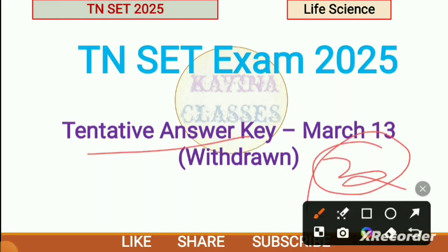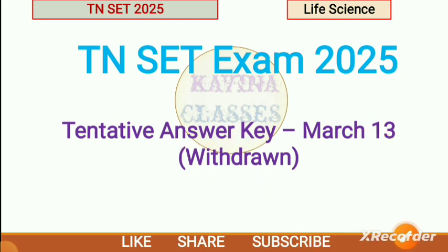Within 3 days, they will release tentative answer keys. They will also release a response sheet. But if there are any mistakes, they will release a notice and withdraw the earlier release — all within 1 week.